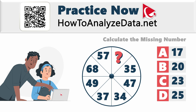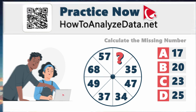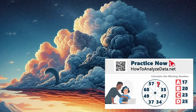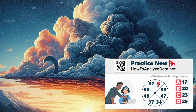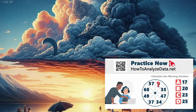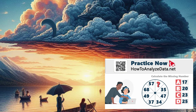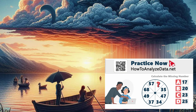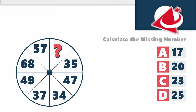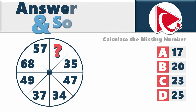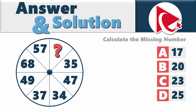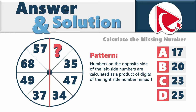And even if you don't have the answer, don't get discouraged. Just like every cloud has a silver lining, every challenging question carries a lesson waiting to be discovered. You will learn and improve with each question. If you look closely at the circle, you can recognize the pattern. The numbers on the opposite side of the left-sided numbers are calculated as a product of digits of the right-side numbers, minus 1.